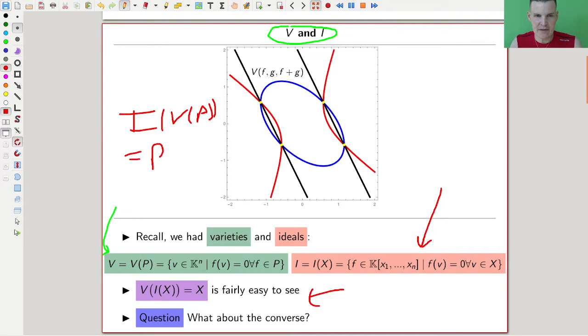Remember we had this picture last time, that the variety applied to ideal applied to X should be X. And the other way around, if you apply the ideal and the variety of some ideal, then it should be P.